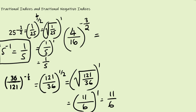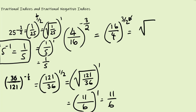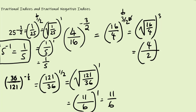Here's another question: 4 over 16 to the power of minus 3 over 2. Since we have a negative power, we flip it over to get 16 over 4 to the power of 3 over 2, changing the sign to positive. We have 2 in the denominator, so we take the square root of 16 over 4, then raise to the power of 3. Square root of 16 is 4, square root of 4 is 2, to the power of 3. So we cube: 4 cubed is 64 and 2 cubed is 8, giving 64 over 8.